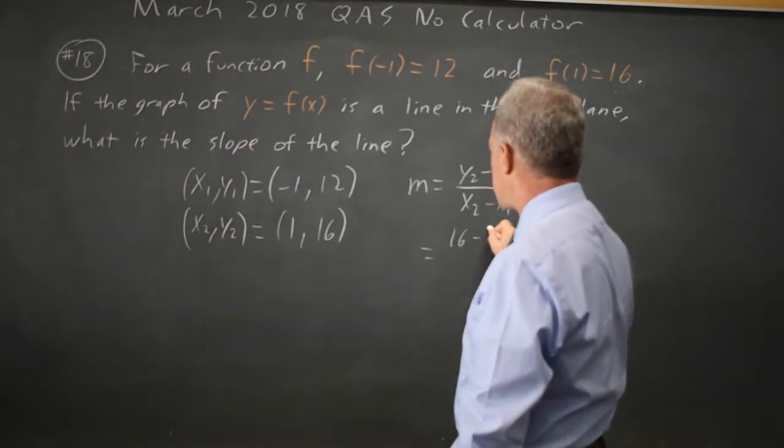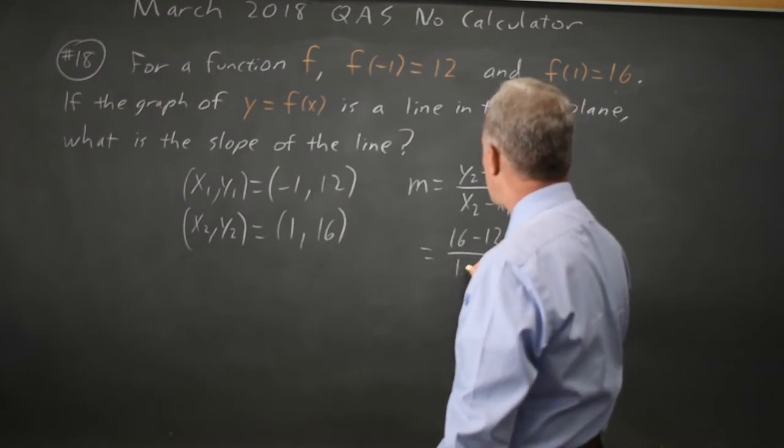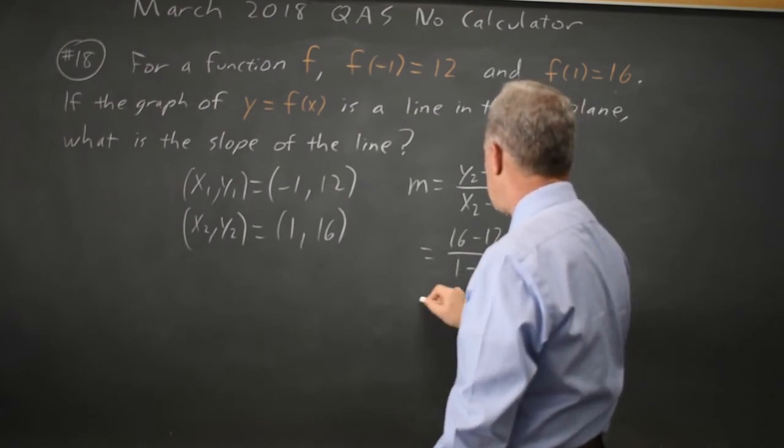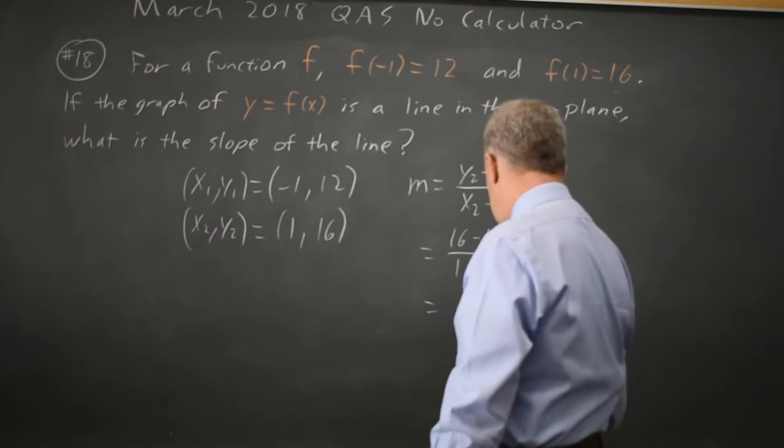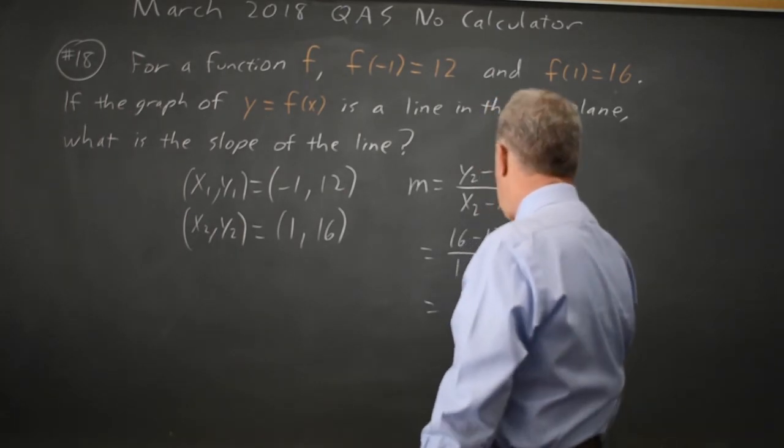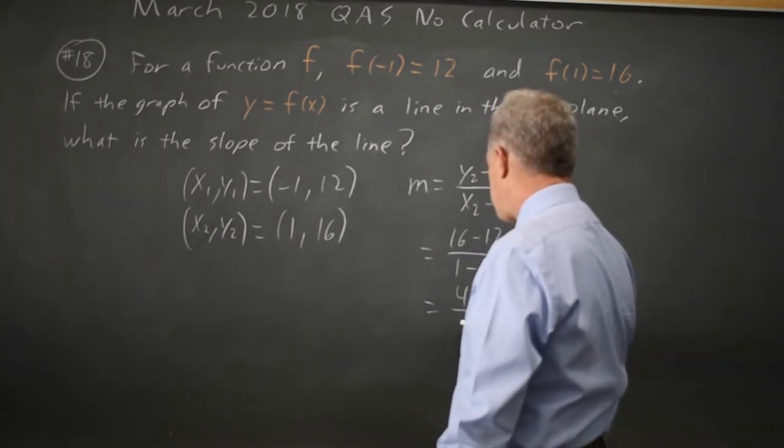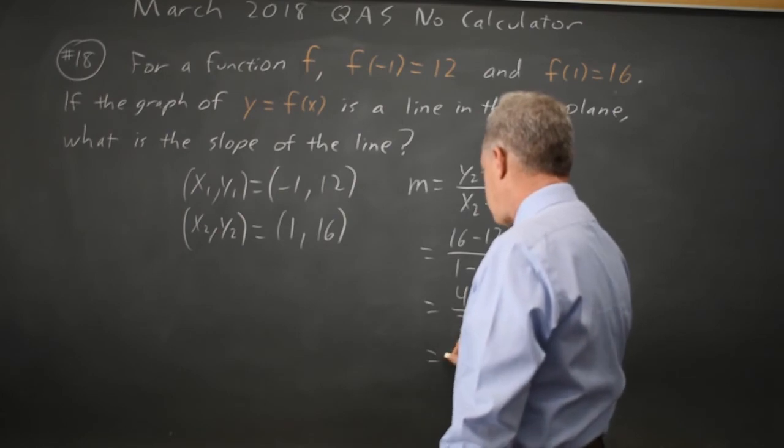So that is 16 minus 12 over 1 minus negative 1, equals 4 over 1 plus 1 is 2, and that's 2.